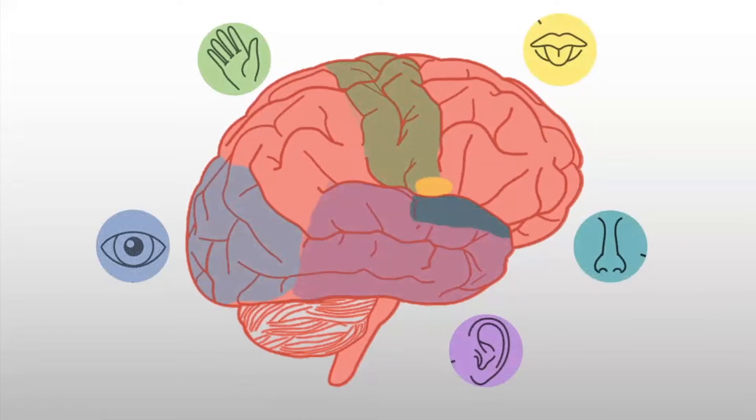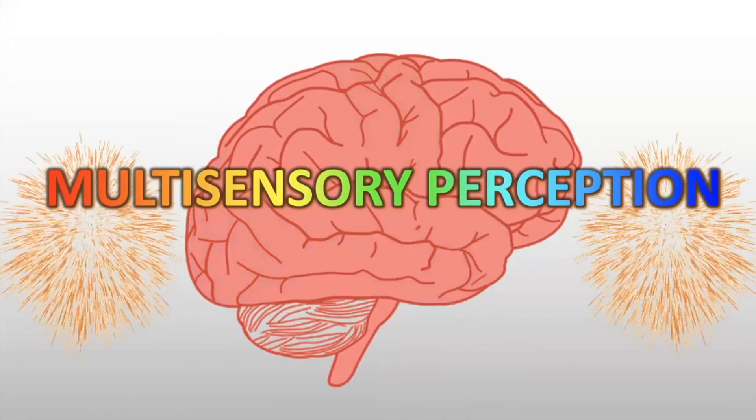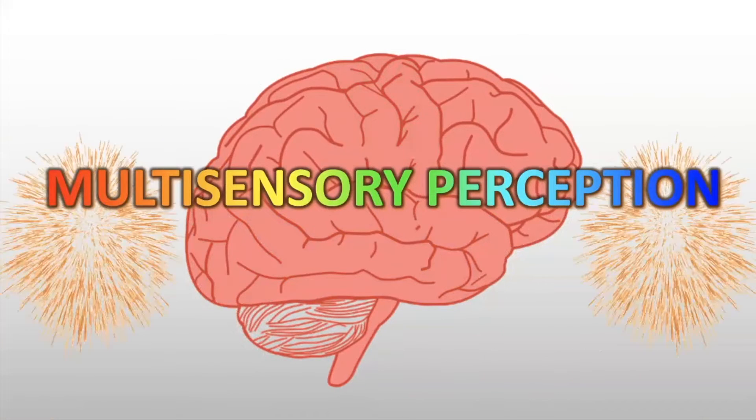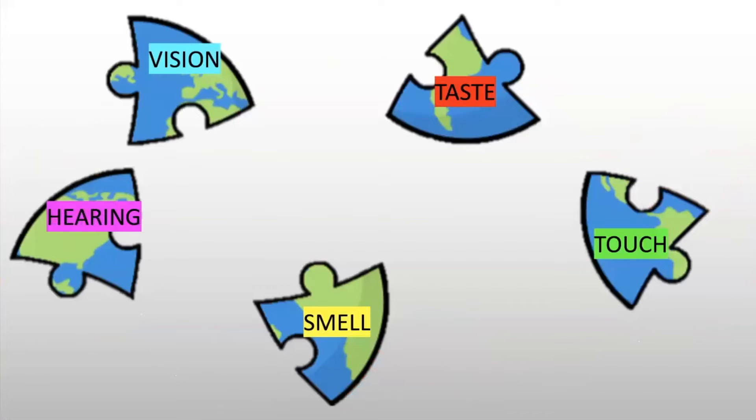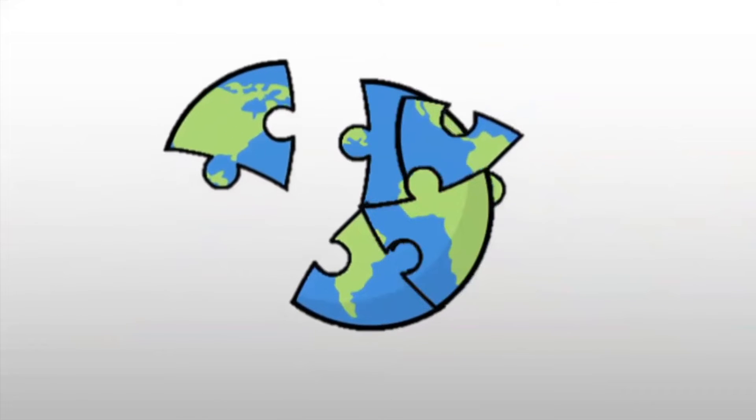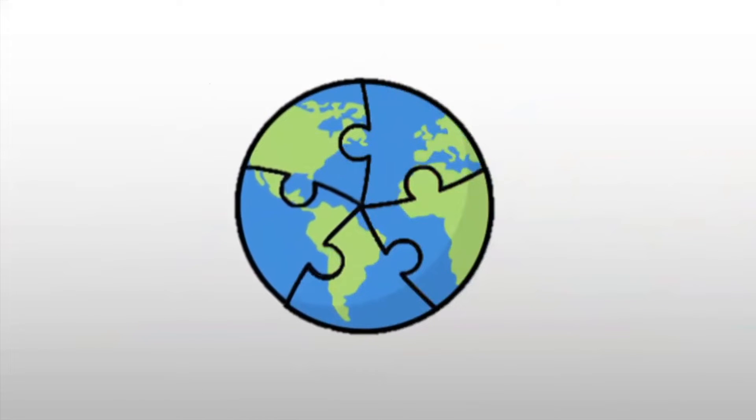All of these are processed separately in the brain and then come together to create what we call multisensory perception. The cool thing is that very little of what we experience is purely one sense, and rather is a combination of multiple senses. Our brain has learned to combine all of the information into creating what we experience as the world around us.